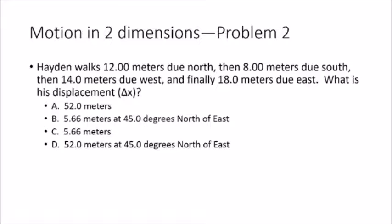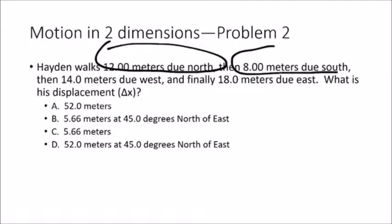In problem two, we have a very similar problem to problem one, except this time we're being asked to find displacement. Displacement is a vector quantity — both the magnitude and the direction matter. So if we want to find something's displacement, we're comparing where Hayden started and where he finished. The displacement is a straight line between those two points. To calculate displacement, we need to first combine movements that are in the same plane. So 12 north and 8 south are in the same plane. Thinking of north as positive and south as negative, we have 12 minus 8, giving us a net north-south displacement of 4 to the north.